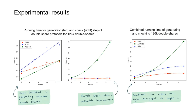We implemented some of the protocols in our paper, specifically the double share generation check. There is a small overhead in generating encoded double shares, but it is very clear that the batch check does yield a noticeable improvement, and looking at the total run time, we do see an overall better running time for generating these double shares.